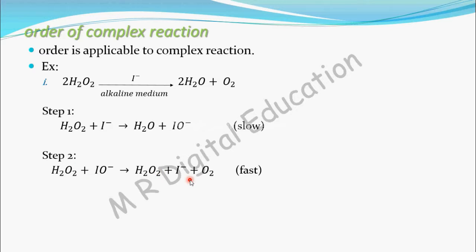In this mechanism, the first step is the slowest step. This step takes more time because in this step the intermediate compound — the I⁻ ion — is forming. To form this intermediate compound, the reaction takes time, so it is the slowest step. In every complex reaction, the step in which the intermediate compound is forming is usually the slowest step.